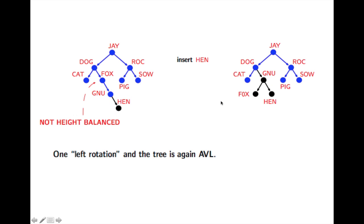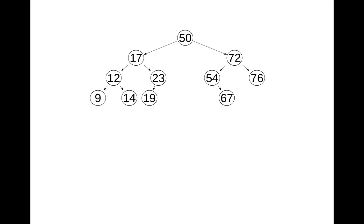So in general, we need one or two rotations to get an unbalanced tree that has been just after one insertion into balance again. So let's look at two cases.